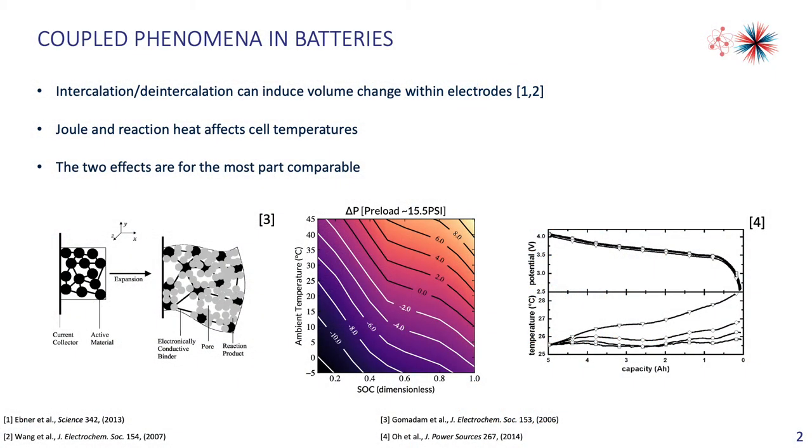Multiple things can happen when a battery is put under an electrical load. Lithium ions moving between the electrodes can induce their own volume changes, and the flow of current will generate heat while the electrochemical reactions will also do the same. The two effects are for the most part comparable.